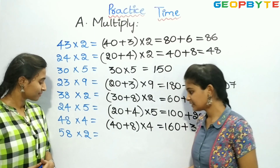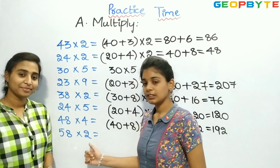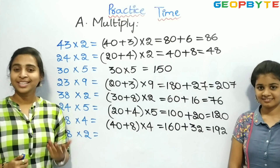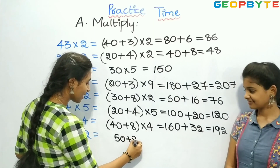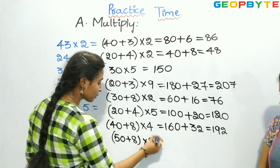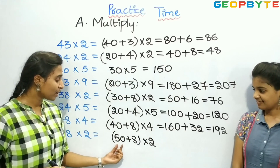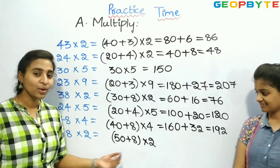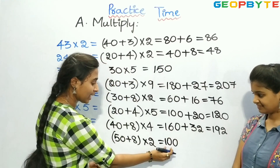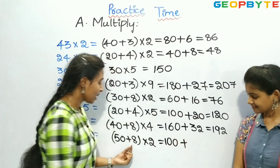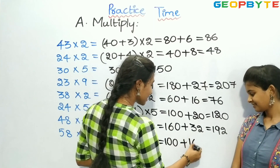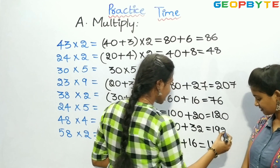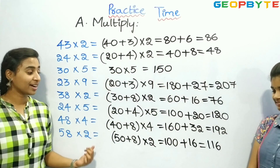Now let us see the next one: 58 into 2. Children, 58 is the bigger number. So let us split 58 as 50 plus 8, into 2. First, we need to multiply 50 and 2 plus 8 and 2. 5 twos are 10, and we have a 0, so it is 100. Plus, 8 twos are 16. So 100 plus 16 is equal to 116. So 58 twos are 116.